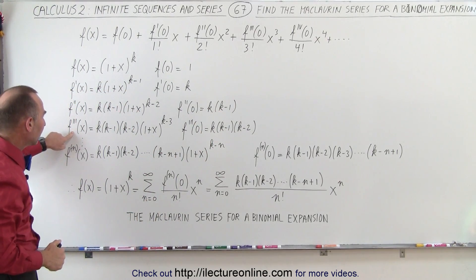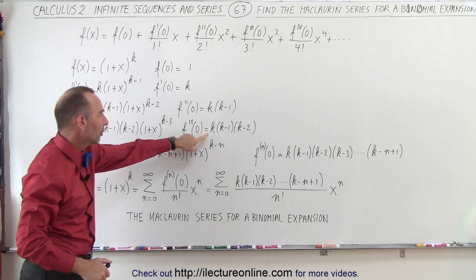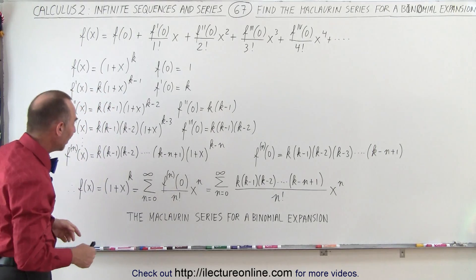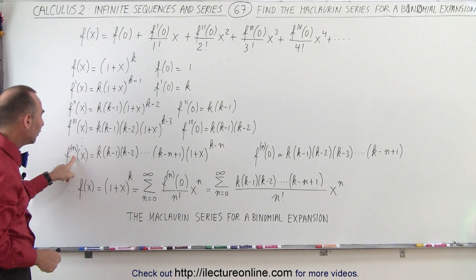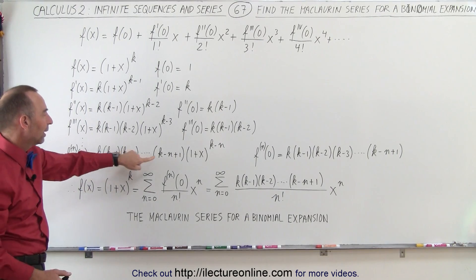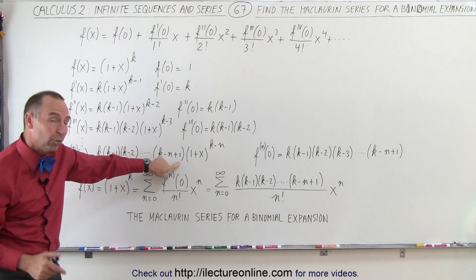This is for the third derivative. We evaluate it at x equals 0, and we get k times k minus 1 times k minus 2, and so forth. And for the nth derivative, the coefficients here will be k, k minus 1, k minus 2,